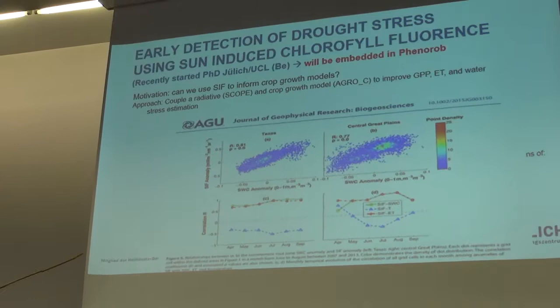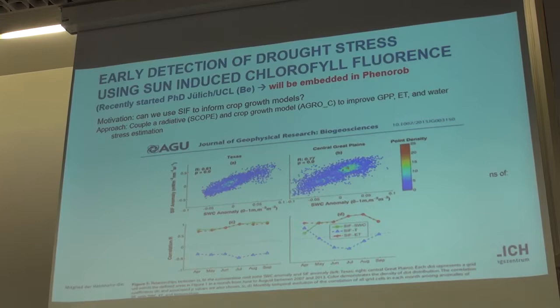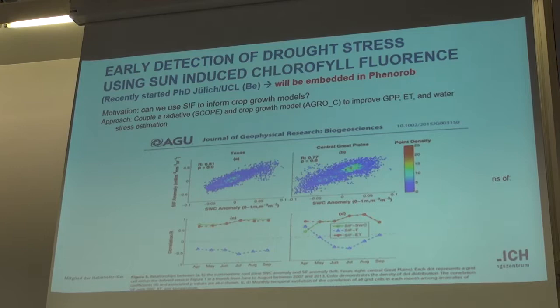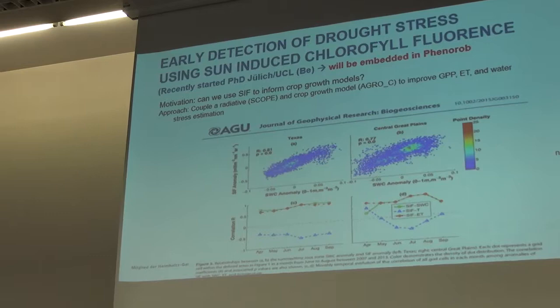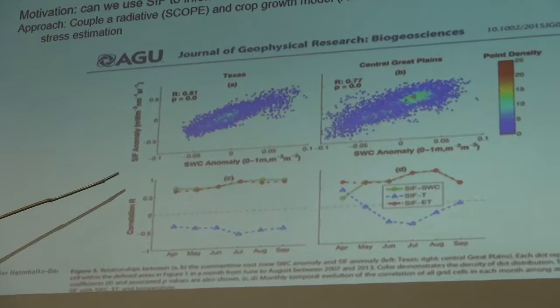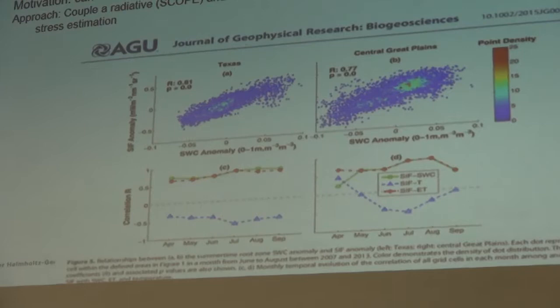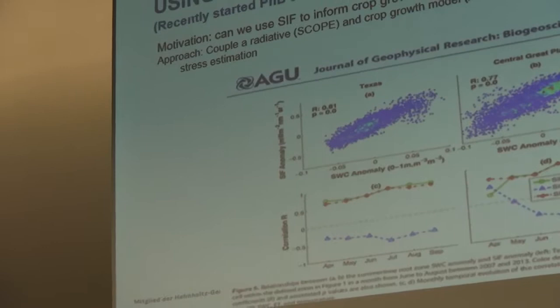The motivation comes from data obtained from the GOME-2 satellite, which measures sun-induced fluorescence — a direct measure of photosynthetic activity. In a graph from Texas during a drought period in 2016, the X-axis shows soil water content anomaly in the root zone, and the Y-axis shows the SIF anomaly. You see that fluorescence decreases as the soil gets drier and increases as it gets wetter.